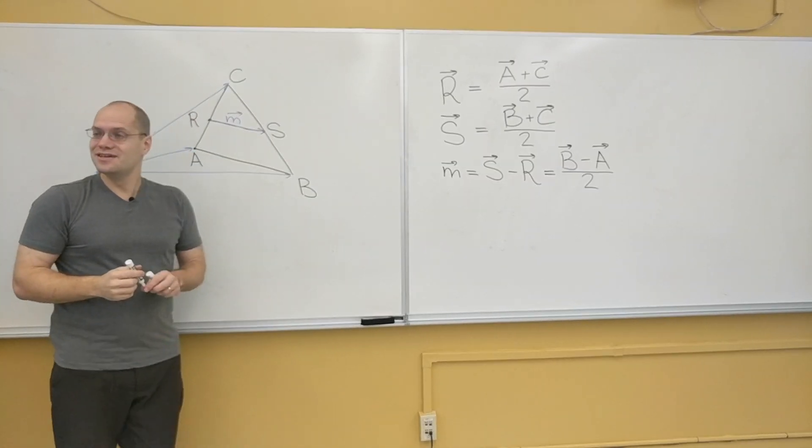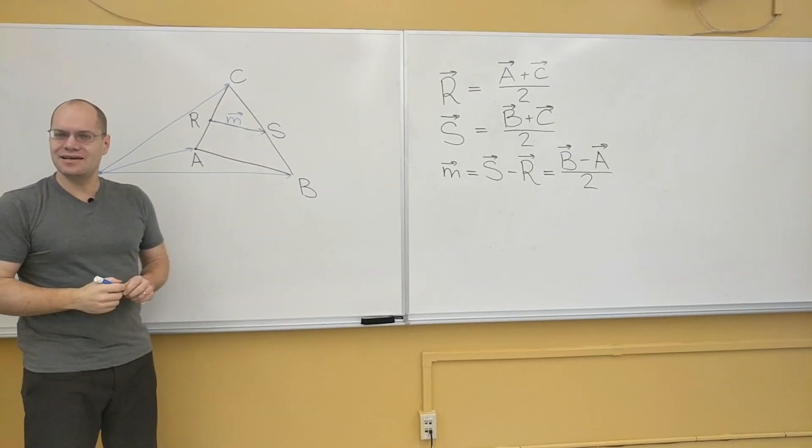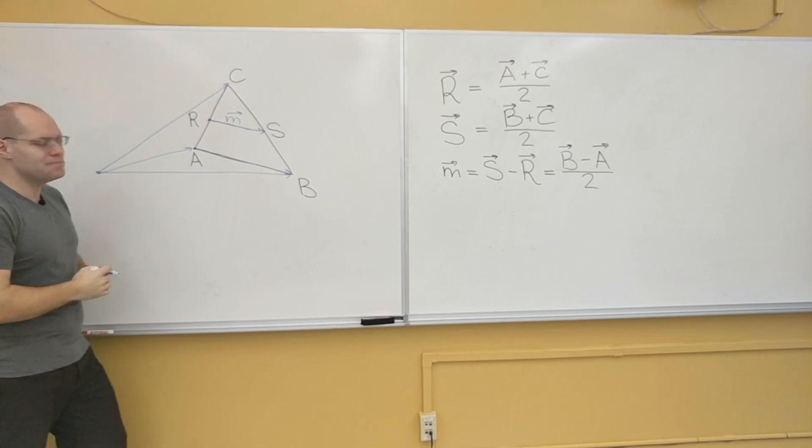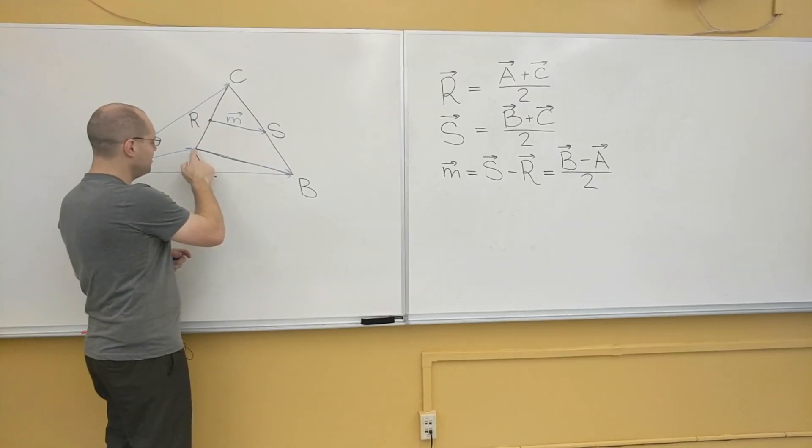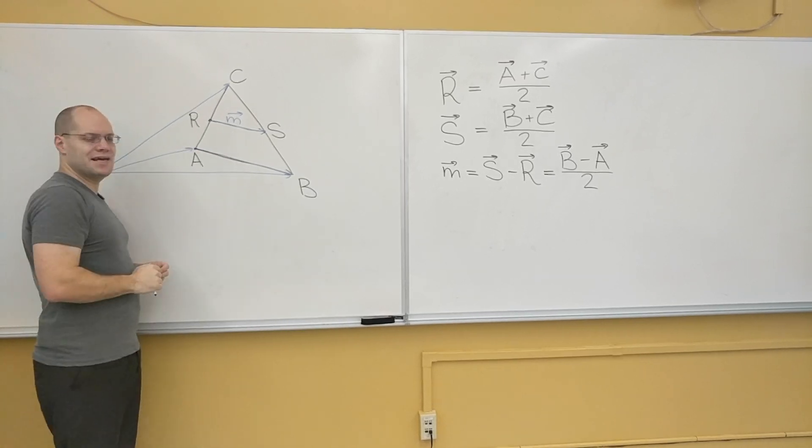And that actually completes the proof, because B minus A is this vector right here. That's B minus A. The tip of B connects to the tip of A, and it points this way.